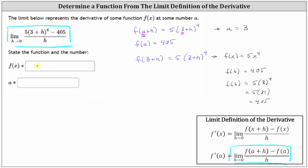So again, we now know f of x is equal to 5x to the fourth, and a is equal to three. I hope you found this helpful.